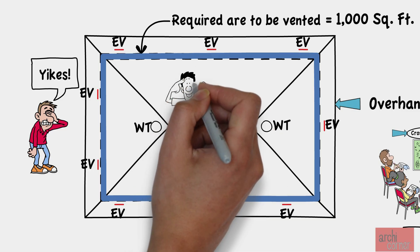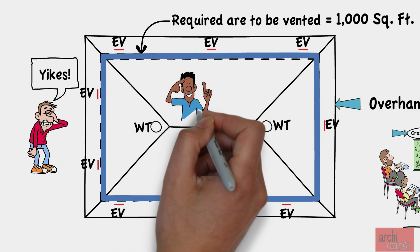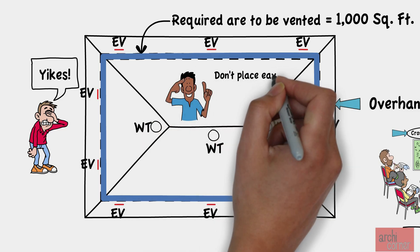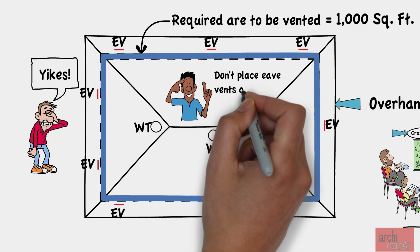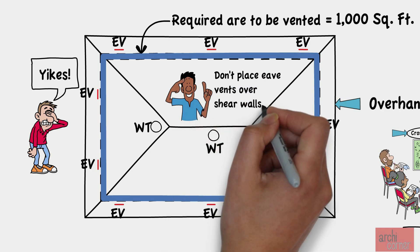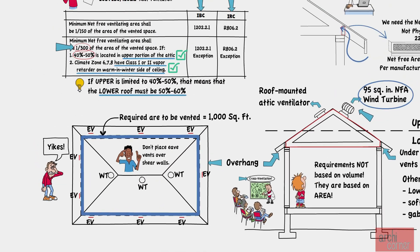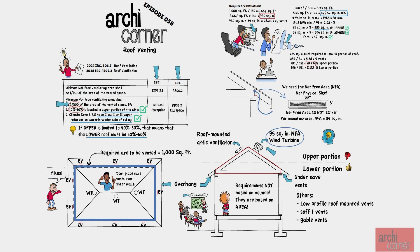One important note: shear walls usually have to reach up to the roof, so be careful not to place eave vents above a shear wall unless your structural engineer approves it. Those are the basic code requirements for venting roofs. If you don't know what shear walls are, check out episode 40.